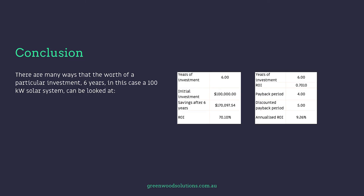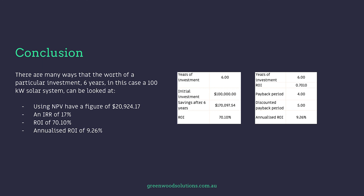Conclusion. There are many ways to look at the worth of a particular investment — in this case, a 100 kilowatt system. Looking at six years: we have an NPV of nearly $21,000; an IRR of 17%; a return on investment of 70.10%; an annualised ROI of 9.26%; a payback period of under four years; and a discounted payback period of just under five years. It's incredibly important to understand what metrics you're using and what language you're using when presenting these projects to a customer. Thanks for watching our presentation on internal rate of return and return on investment.